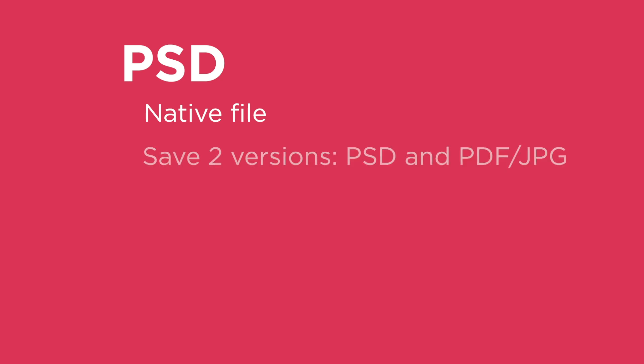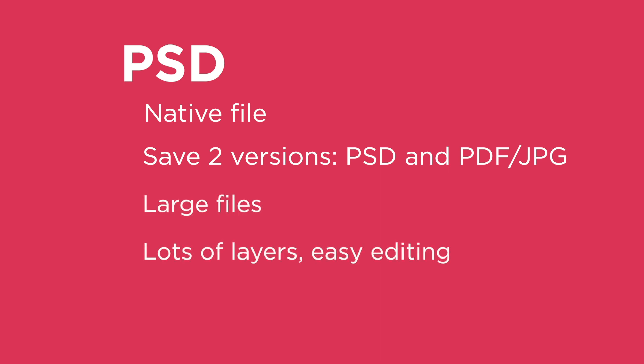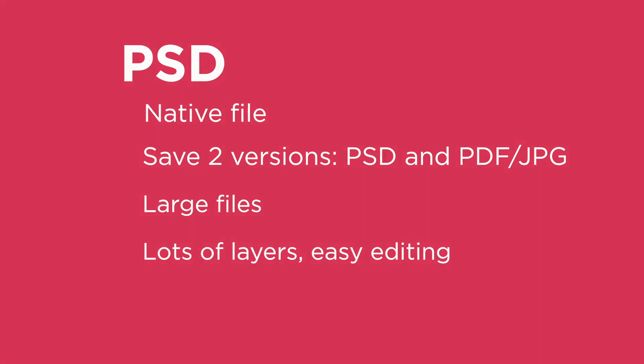Now let's look at raster formats. First is PSD. Like AI, this is a native file, so most people can't open or use it. It's good to save two versions — your PSD, and then an image someone else can use like a PDF or JPEG. PSDs can be really large because they usually have lots of layers, but they're great for that reason — they're really easy to edit.